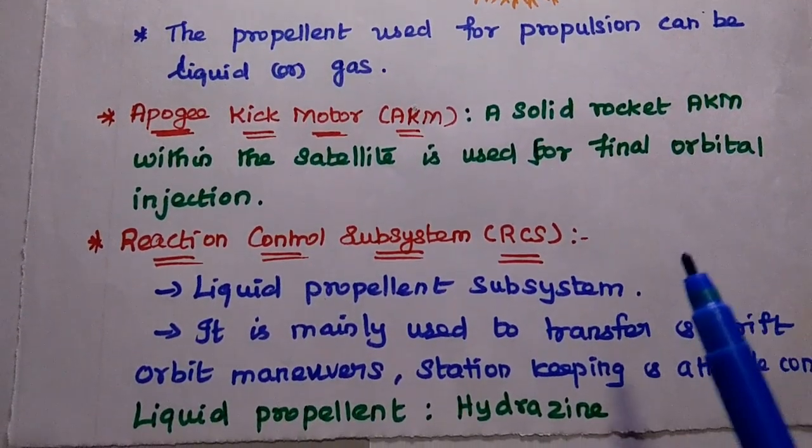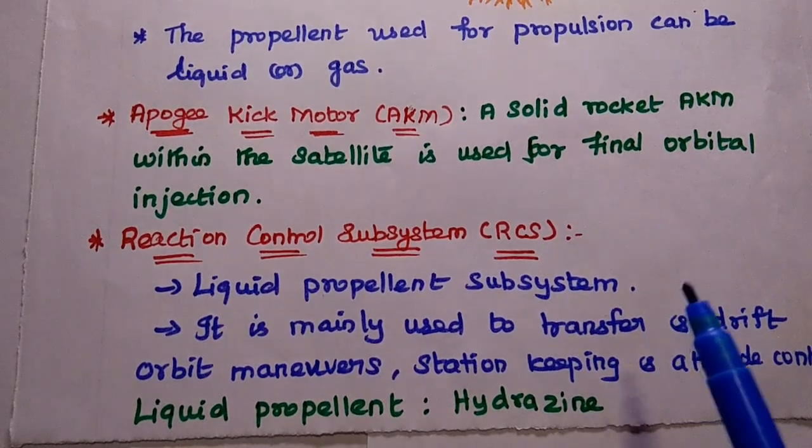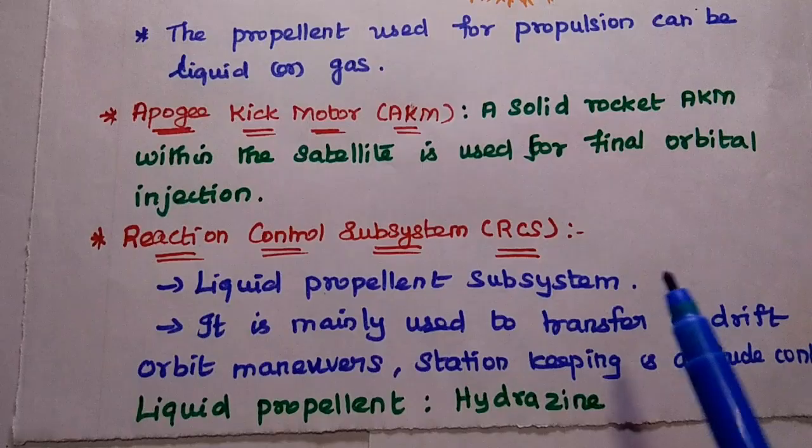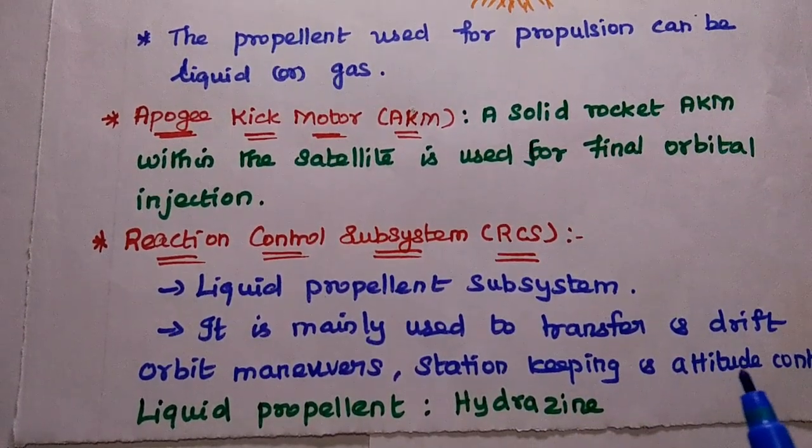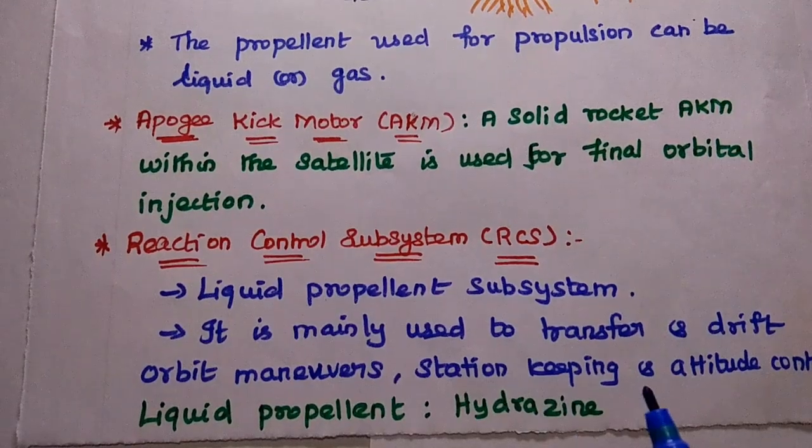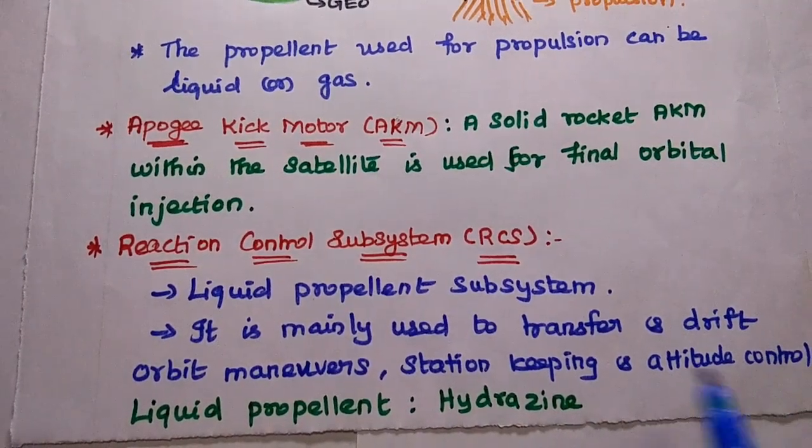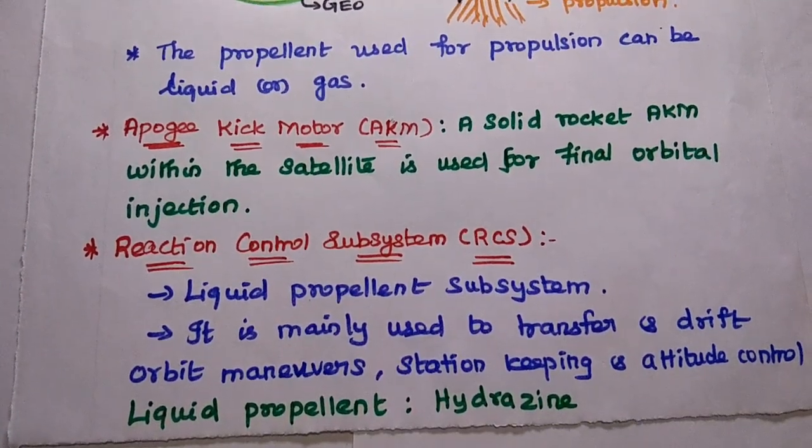The reaction control subsystem, RCS, is a liquid propellant subsystem. It is mainly used for transfer and drift orbit maneuvers, station keeping, and attitude control. The liquid propellant can be hydrazine.